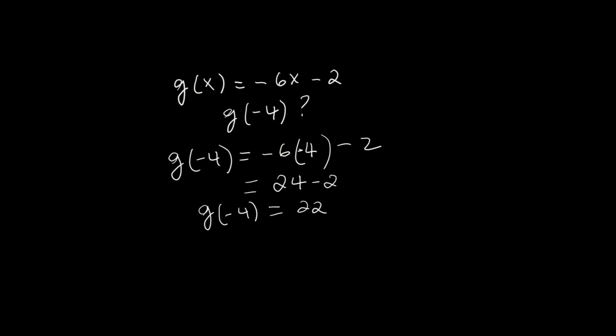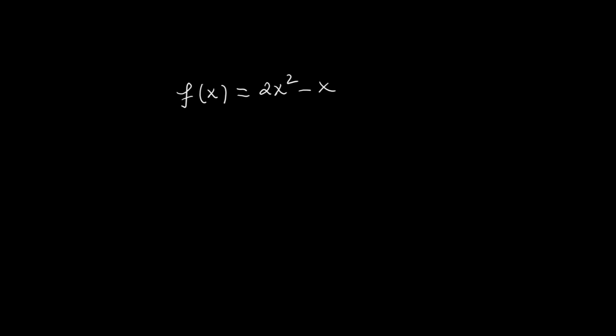Here's where it gets a little more interesting. What happens if the input is not a number, but an expression? Let's take f(x) = 2x² - x. Find f(x + h). That means we replace every x in the function with the quantity x + h. f(x + h) = 2(x + h)² - (x + h).